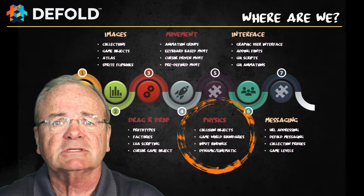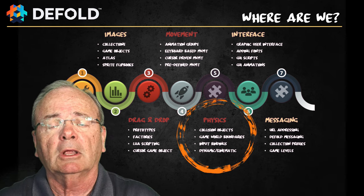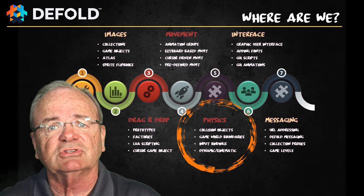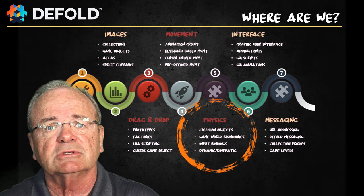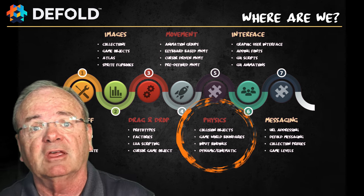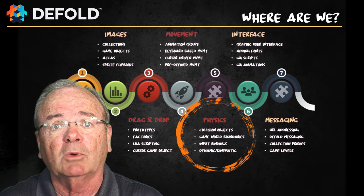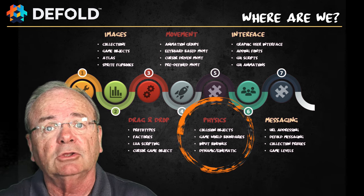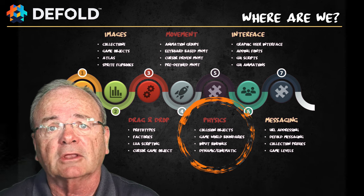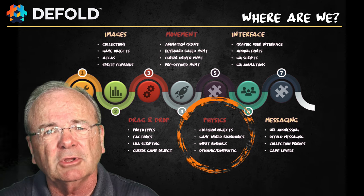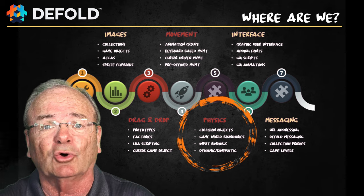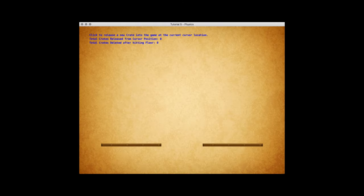Before we begin, let's take a quick benchmark of where we are. As we've explained before, there's a total of seven tutorials in this introductory series, and we're now on tutorial number five. When we finish our physics engine tutorial, we're going to have two to go, and then you'll have a full toolkit that allows you to really begin building some amazing games using this great engine called default.